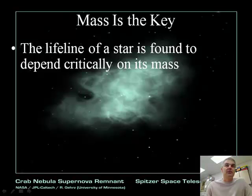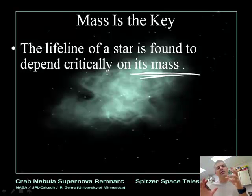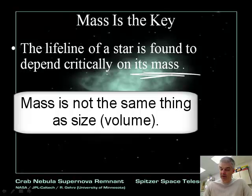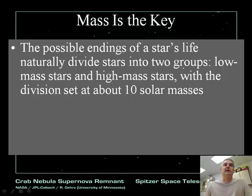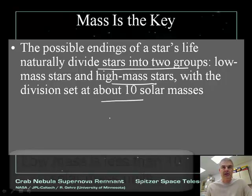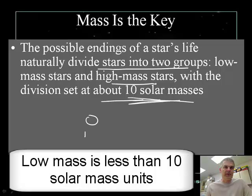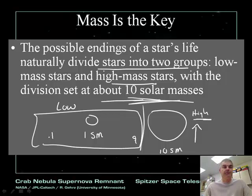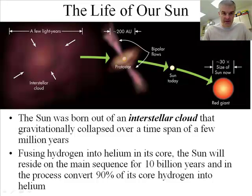The lifetime of a star is determined by its mass — how much stuff is in it, not how big it is physically. Something can be big and light, or small and heavy. Stars are divided into two groups: low mass and high mass, with the division at about ten solar masses. Our Sun is one solar mass. Stars with ten solar masses or greater are high mass stars; anything less is a low mass star.